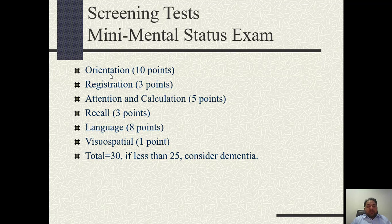For the calculation section, the patient is asked to subtract 7 serially. Starting from 100 minus 7 equals 93 — if the patient answers correctly they score one point. Then continuing: 93 minus 7 is 86, minus 7 is 79, minus 7 is 72, minus 7 is 65. One point is given for each correct answer, for a total of 5 points.